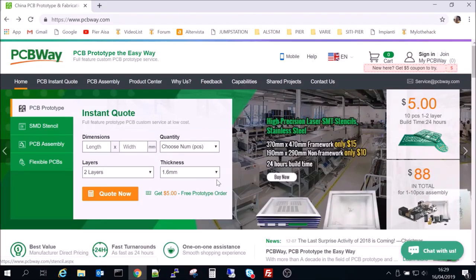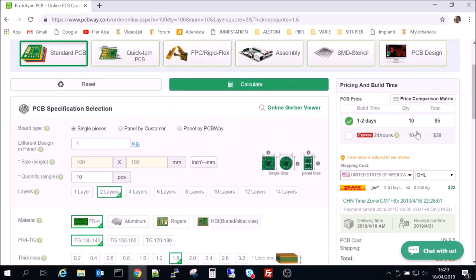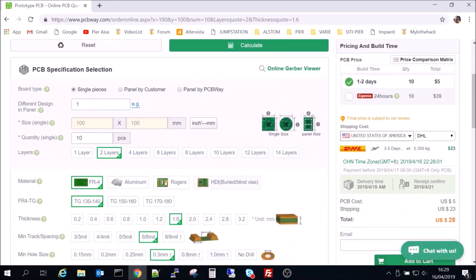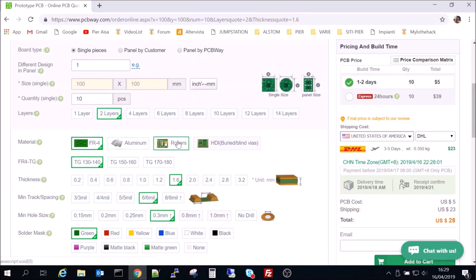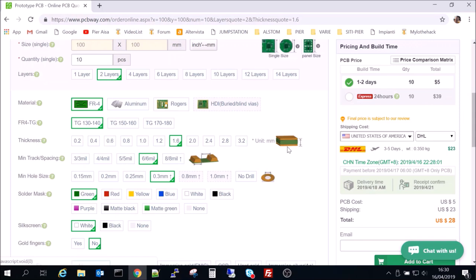The cost is only $5 for 10 PCBs with a maximum dimension of 10 cm per side. The manufacturing time is reduced to 48 hours with a typical delivery time of 72 hours with Express Shipping.